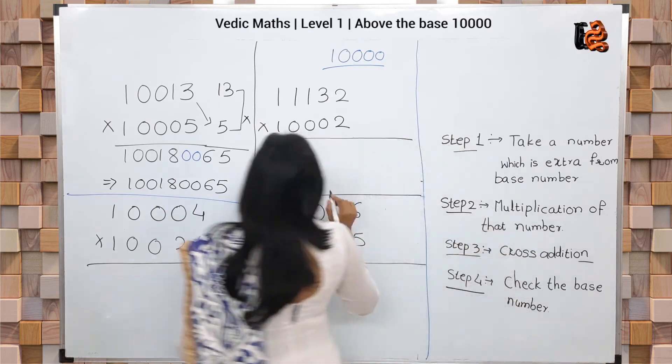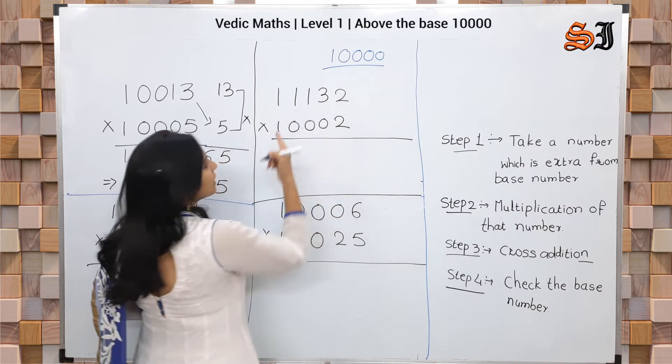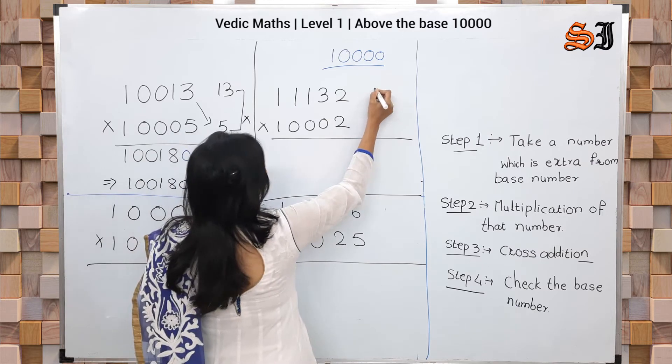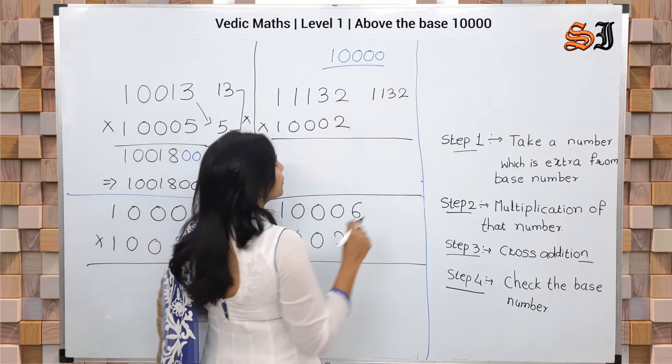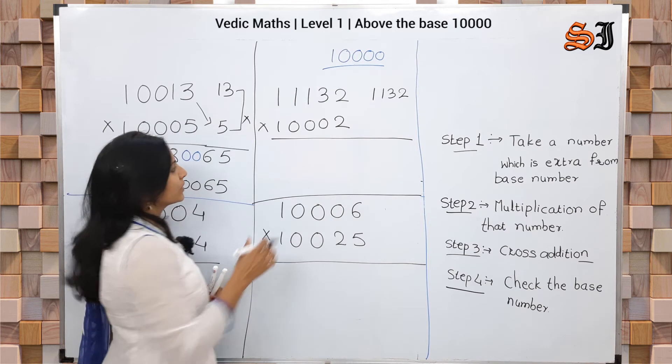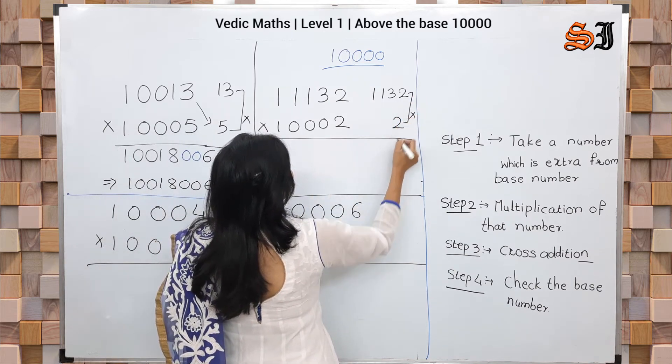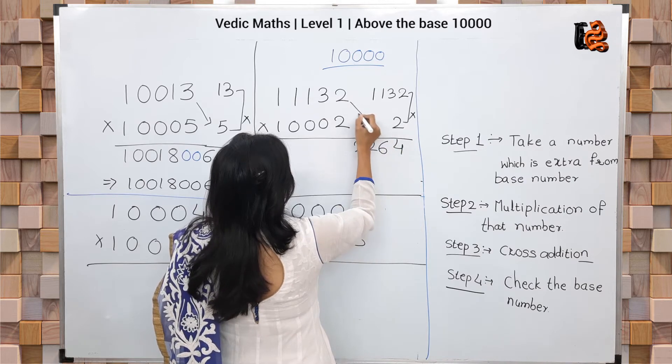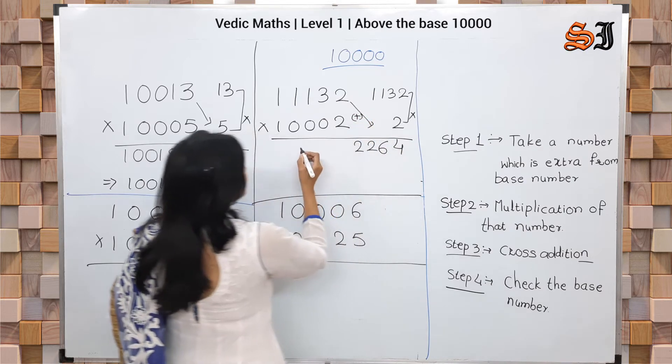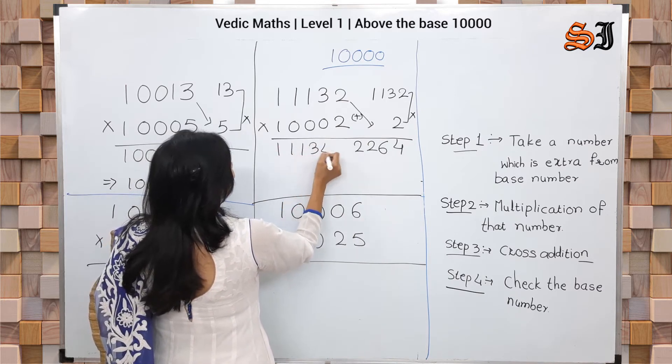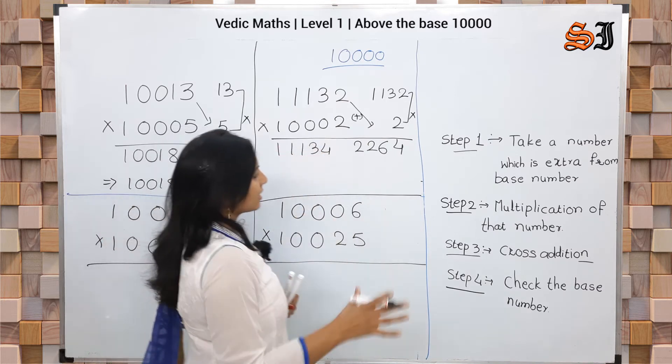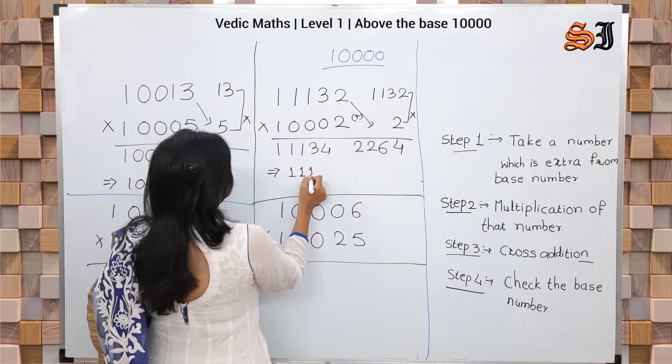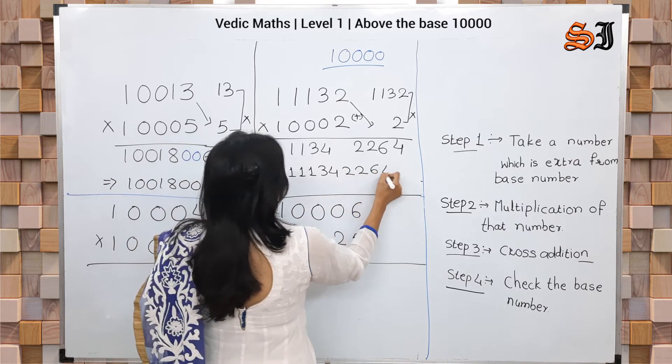Next one: 11132 above the base 10,000, multiplied by 10002. Carefully look at this number 11132. Multiply by 2: 2×2=4, 2×3=6, 2×1=2, 2×1=2. Then cross addition gives 11134. Right side has four numbers already, so the answer is 1113422264.